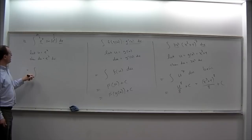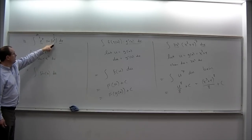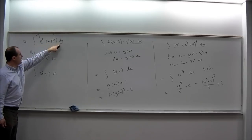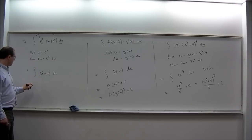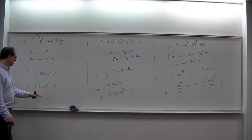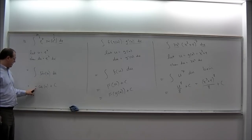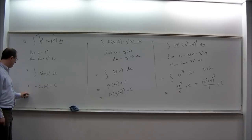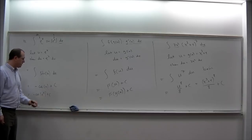The integral transforms into the integral of sine of U DU — sine of U, and then e to the x dx which is DU. This is a basic integral. The antiderivative of sine is negative cosine: if we take the derivative of cosine we get negative sine, so the derivative of negative cosine gives us sine. The final answer is negative cosine of e to the x plus C.